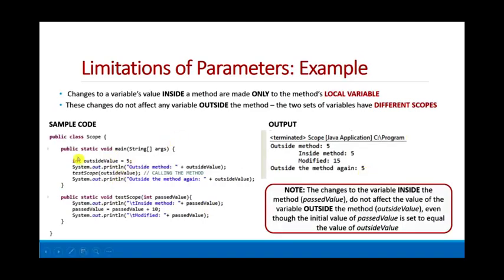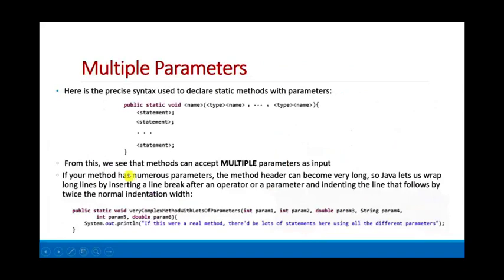So, here we have the main function here, and it's calling testScope here, and then it's printing a couple of values. TestScope takes this value, and then it prints it out. It adds 10 to the value, and it prints it out again. But, this has nothing to do, this is the value that you're passing in, and this modification has nothing to do with the variables that are over here. So, in this case, we passed in 5. Inside the method, it became 15. But, when we returned, it's still 5.